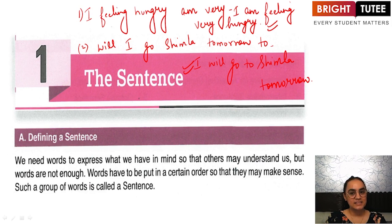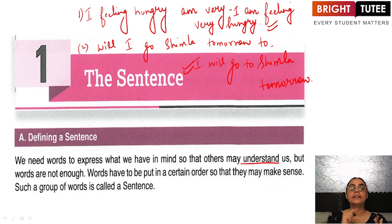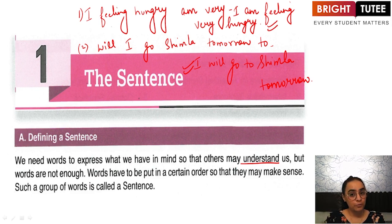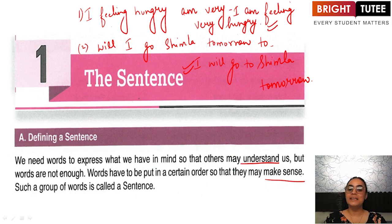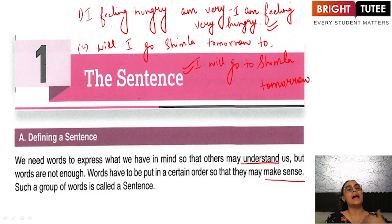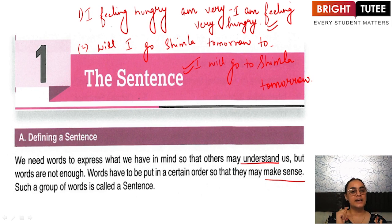What according to you is a sentence now? A sentence is basically something that can help others understand us. Whatever we have in our mind, once we express it with the help of words in such a manner that others are able to understand us, this is what a sentence is. But what is important for a group of words to be termed a sentence? It should make sense. Unless and until a group of words is making sense, it will not be termed as a sentence.